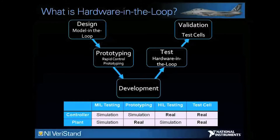The prototype stage involves the finished prototype running on the real-time target, but this time controlling a real plant. During development, individual components of a model are tested on the Veristand engine, again with a simulated plant. The hardware-in-the-loop testing stage involves the completed controller controlling a simulated plant.